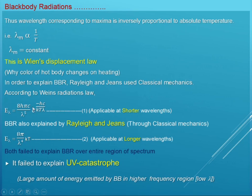The first equation, developed by Wien and popularly called Wien's Radiation Law — E_lambda = 8πhc/λ⁵ × exp(-hc/λkT) — is applicable at shorter wavelength. The second equation, developed by Rayleigh and Jeans — E_lambda = 8πkT/λ⁴ — is applicable to the longer wavelength. So one equation applies to shorter wavelength and another to longer wavelength.